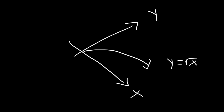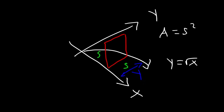Another way to graph this problem is to draw the function y equals square root of x with the cross section visible. That line represents s — the base of the square. Drawing the square shows that the area is s squared, and you can clearly see that y is equal to s. This visualization may help you understand the setup better.